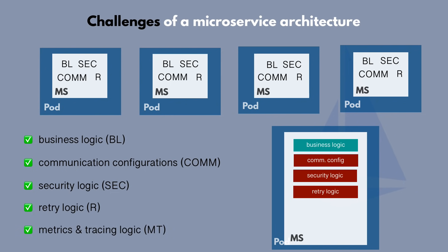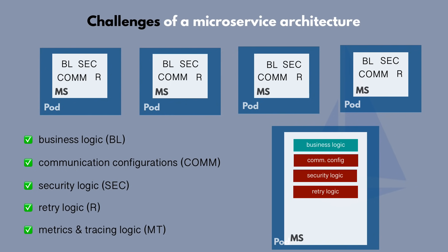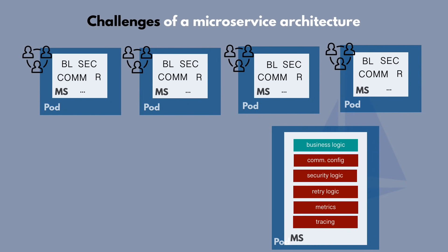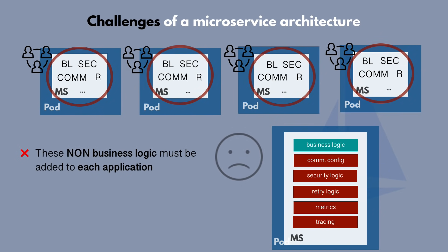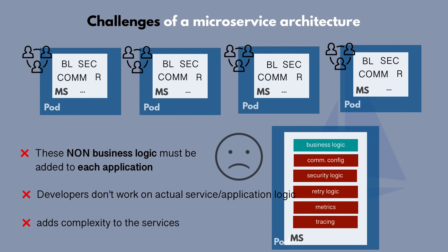What about metrics for your services? You want to monitor how the services are performing — what HTTP errors you're getting, how many requests your microservices are receiving or sending, or how long a request takes to identify bottlenecks in your application. So the development team may add monitoring logic for Prometheus using its client library and collect tracing data using a tracing library like Zipkin. As you can see, teams of developers for each microservice need to add all this logic to each service, which means developers are not working on actual service logic but are busy adding network logic for metrics, security, and communication — adding complexity instead of keeping services simple and lightweight.